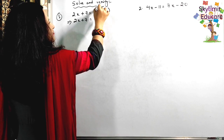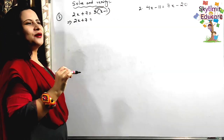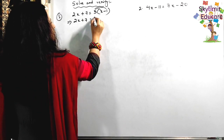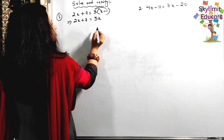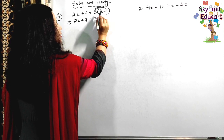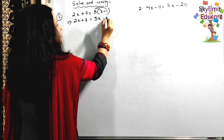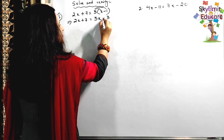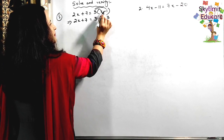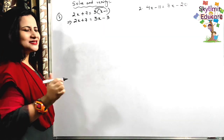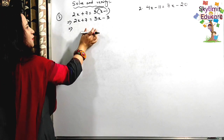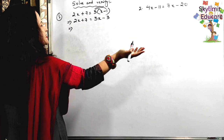First, multiply 3 with x, then multiply 3 with 1. So 3 multiplied by x gives 3x. Now all of this is under a minus, so 3 multiplied by minus 1 gives minus 3 — because 3 ones are 3, and plus multiplied by minus gives minus.